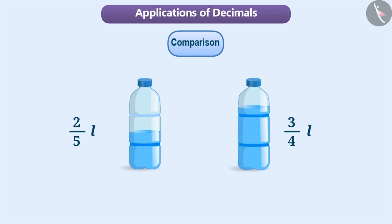But if we say that one bottle has 0.4 litres of water and the other has 0.75 litres of water, then these can be compared very easily and we can say that the second bottle has more water. Now, you must have understood that it is very easy to compare quantities with the help of decimal numbers.